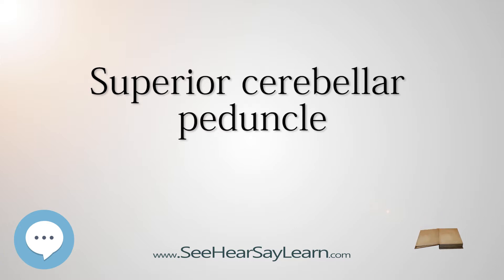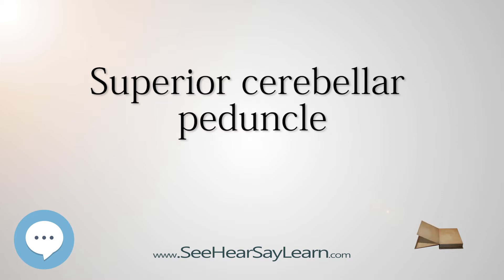The decussation of the superior cerebellar peduncle is the crossing of fibers of the superior cerebellar peduncle across the midline, and is located at the level of the inferior colliculi. It comprises the cerebellar peduncle, which arises from the dentate nucleus.